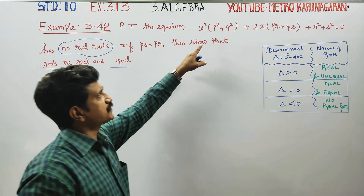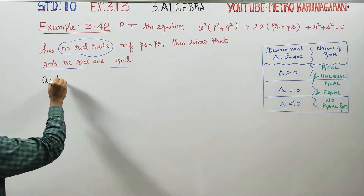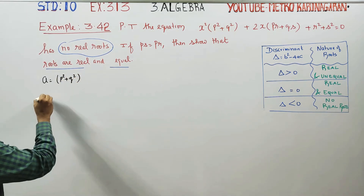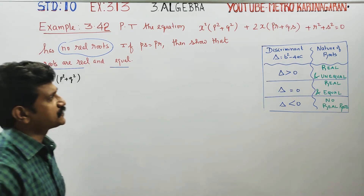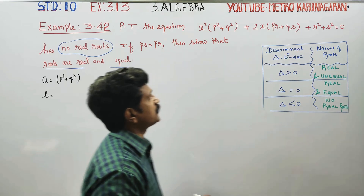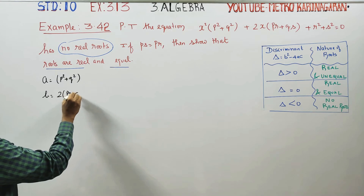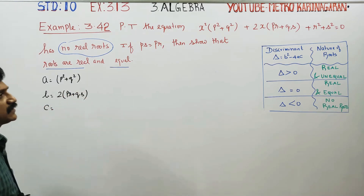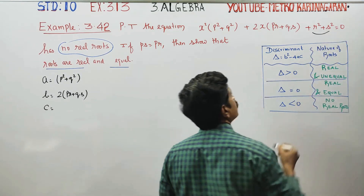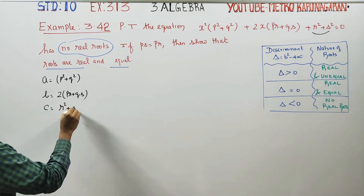The coefficient of x² is p² plus q², so a equals p² plus q². B is the coefficient of x, which equals 2 times (pr plus qs). C is the constant, which equals r² plus s².